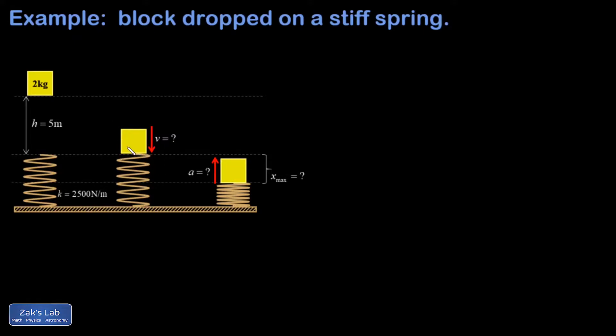We're trying to figure out several things here. I want to find the speed of the block right before it impacts the spring, the maximum compression of the spring, and finally the acceleration of the block when it's at that maximum compression point. I know it will be accelerating upward because it's about to bounce back up to the same height that it came from if energy is going to be conserved.